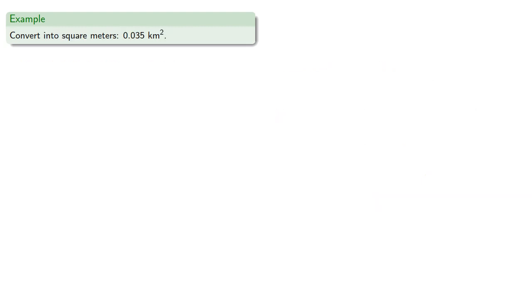Nothing important changes if we have a derived unit like area. So we want to convert into square meters, 0.035 square kilometers. So we have 0.035 square kilometers, and we still want to have 0.035 square kilometers.